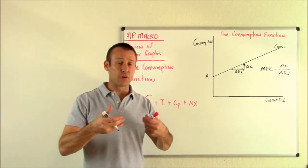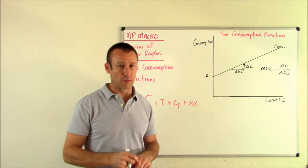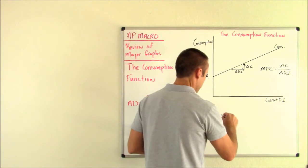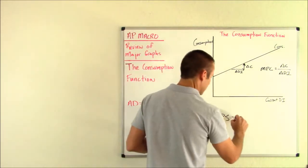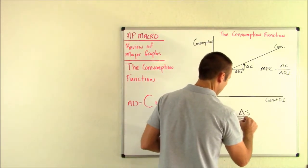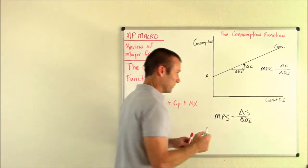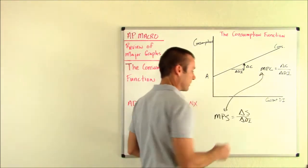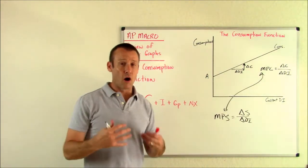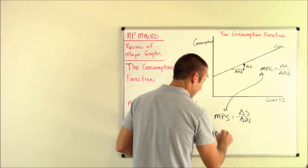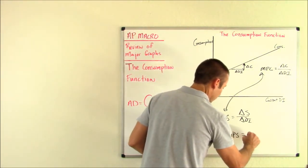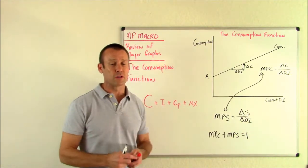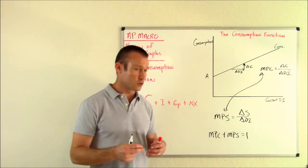Now, next, we also need to know that there's something else you can do with your disposable income. You can save. So there is this thing called the MPS. The MPS is our delta in savings over our delta in DI. So my hope is that when you study the consumption function, you link these two things that we very much need to know. Also, of course, it's important that a student knows the MPC plus the MPS equals one. Those two added together equals one because there's only two things that we do with our disposable income.